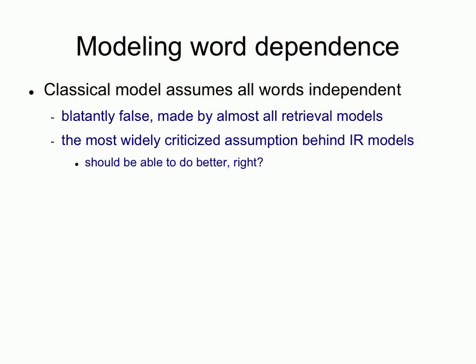It's a blatantly false assumption — the most criticized assumption about the classical model. It seems like you should be able to do better. We know how to model relationships between terms; we can compute conditional probabilities of one word co-occurring with another instead of treating them all in isolation.